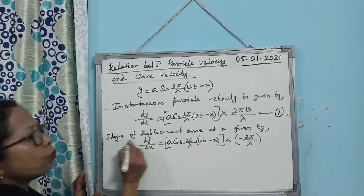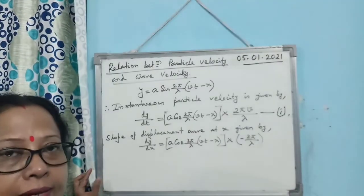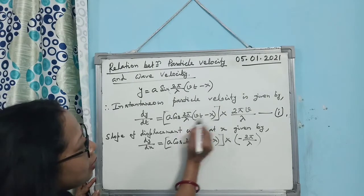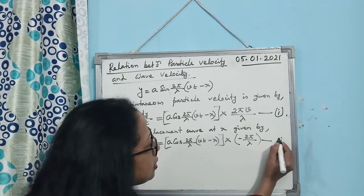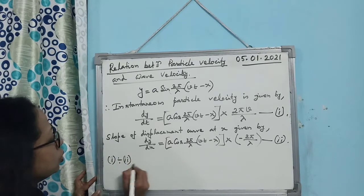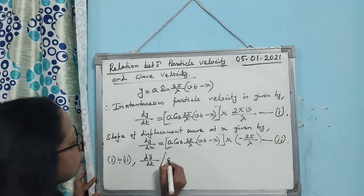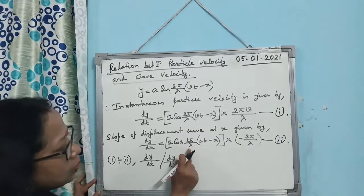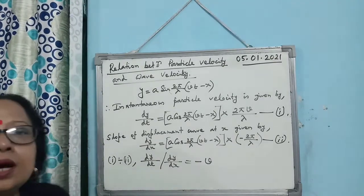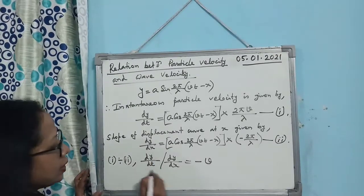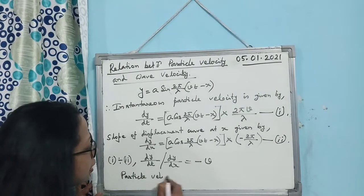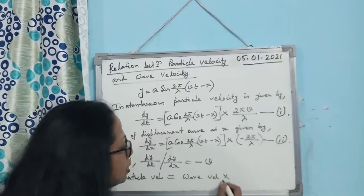The slope of the displacement curve is dy/dx. Taking the derivative with respect to x: dy/dx = A cos(2π/λ)(vt minus x) multiplied by d/dx of (2π/λ)(−x), which gives minus 2π/λ. So dy/dx = −A·(2π/λ)·cos(2π/λ)(vt minus x). Call this equation 2. Dividing equation 1 by equation 2, (dy/dt)/(dy/dx) = (2πv/λ)/(−2π/λ) = −v.